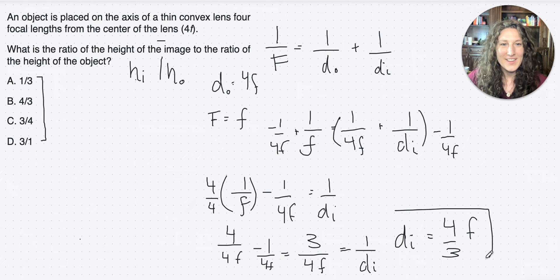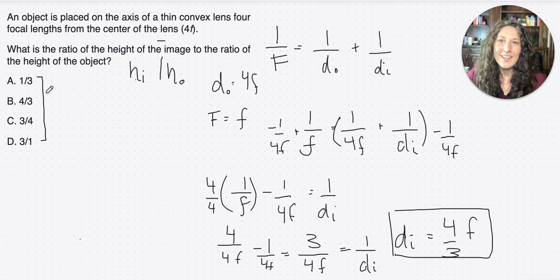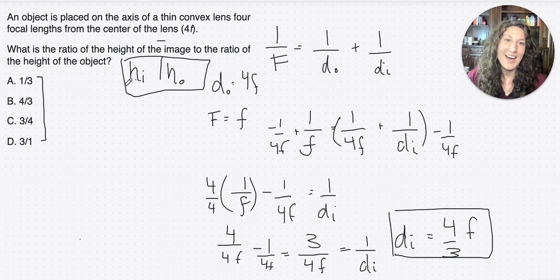All right, so that's our di, but that wasn't our answer, right? So it's very tempting to be like, cool, 4 thirds, got it. Answer must be b. No, we got to slow down and remember what we were solving for, right, which was the height of the image over the height of the object.